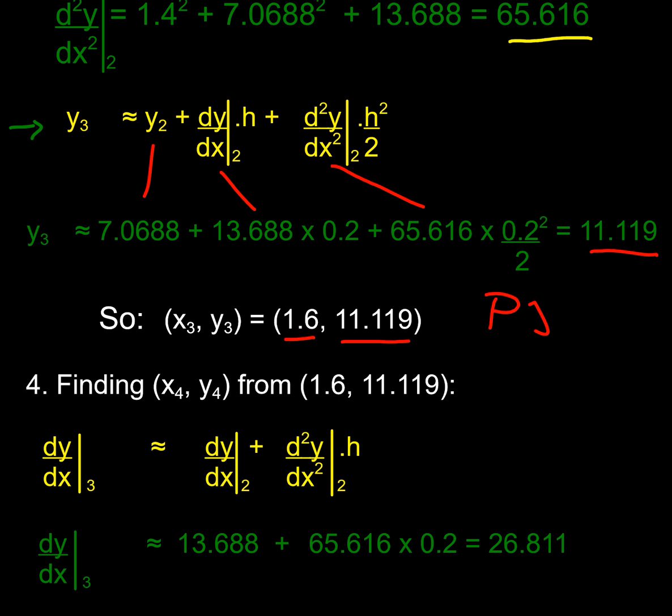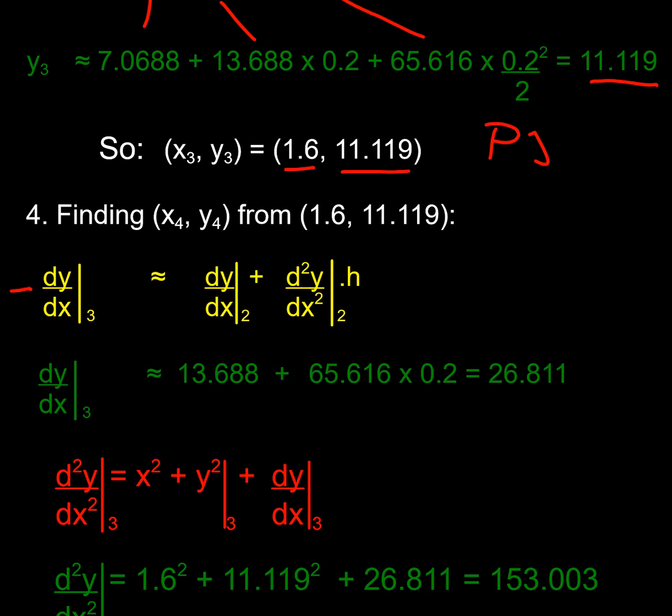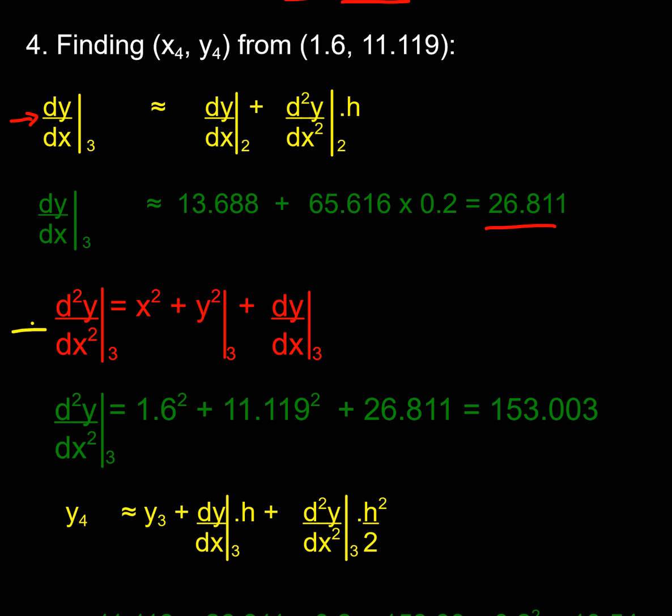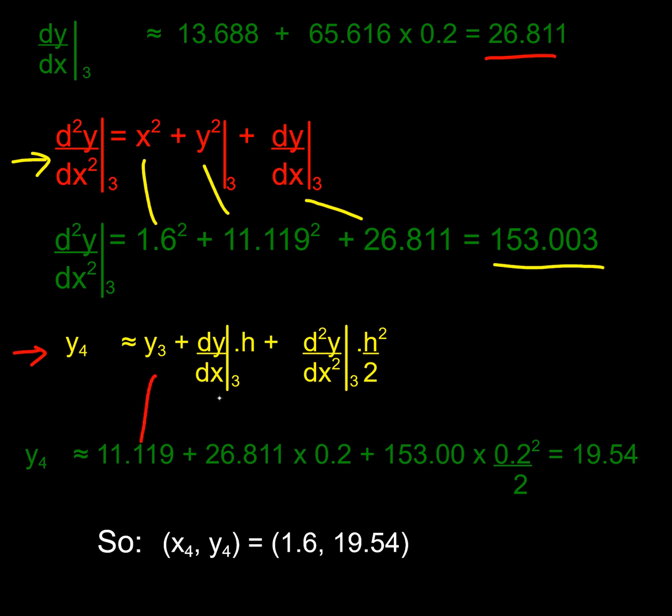Don't need to be this accurate really, I can repeat the same process again, find the gradient at P3, there we go, 26, it's risen even more, substitute that into my differential equation, to find my second differential, which is now up to 150, wow, that's really curved, isn't it? And then I take those values, substitute them into my quadratic fit, and using my y_3 values, and I get my P4, y, there it is, 19.54, and I could just carry on doing this forever.